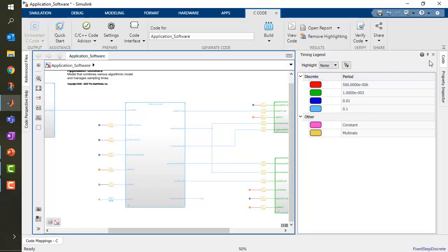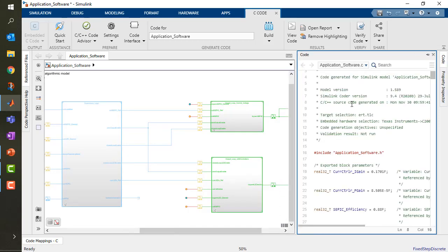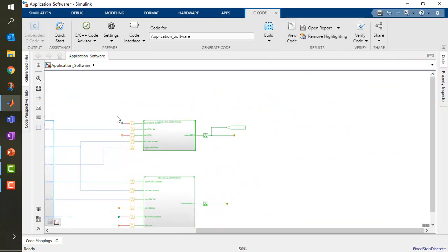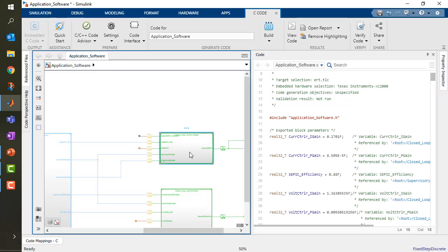Now one of the things that we implemented is the ability to look at coded model side by side with the code interface. Here I can select my code interface, and then the code will pop up here on the side and allow me bidirectional traceability between the model and the code.